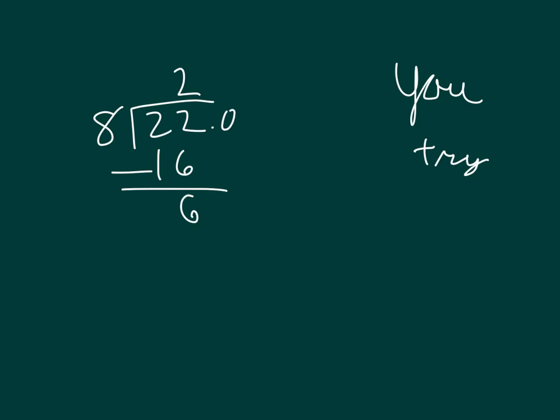You try. Use the standard algorithm to go ahead and divide 22 by 8. 8 goes into 22 two whole times because 2 times 8 is 16. 22 minus 16 is 6. Add a 0 to drop a 0.